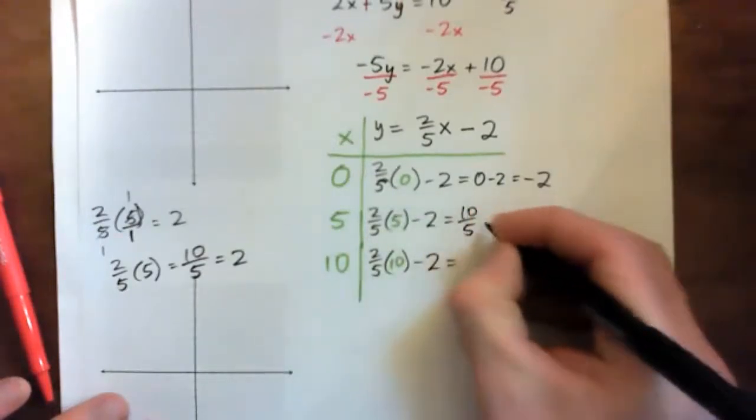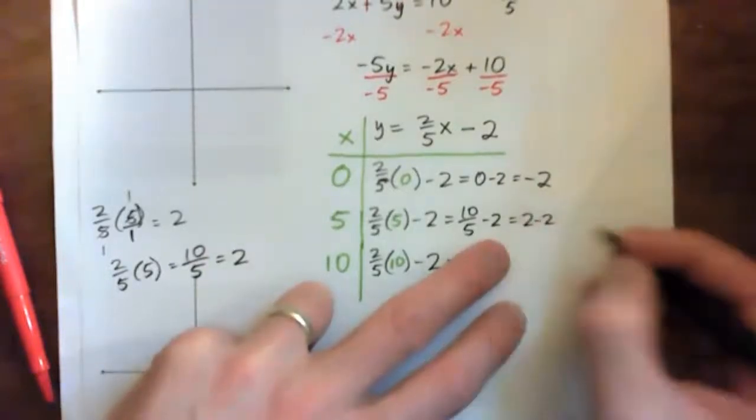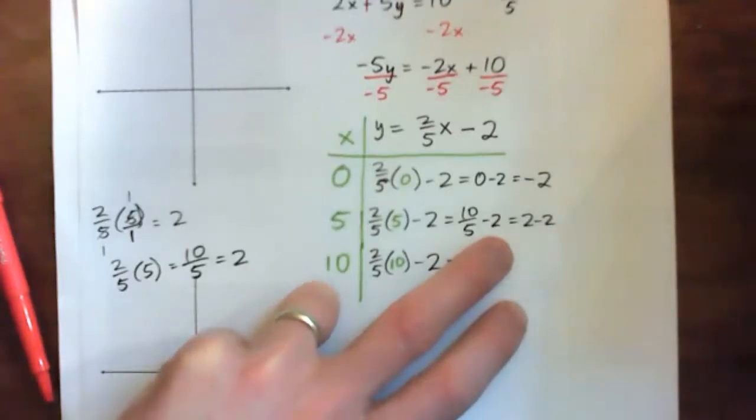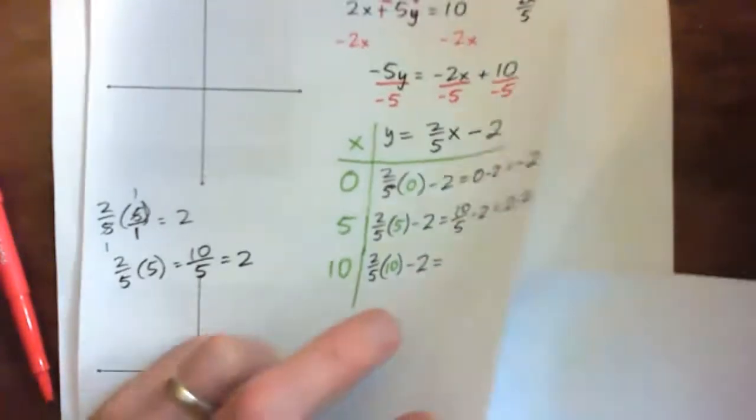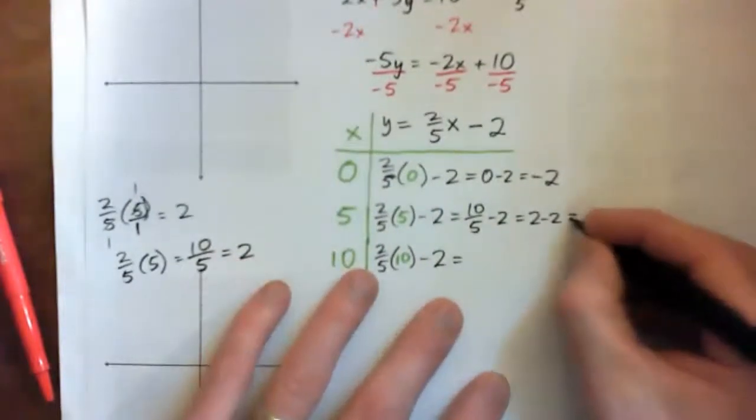So, I have a 10 over 5 minus 2, which gives us 2 minus 2, which is 0.